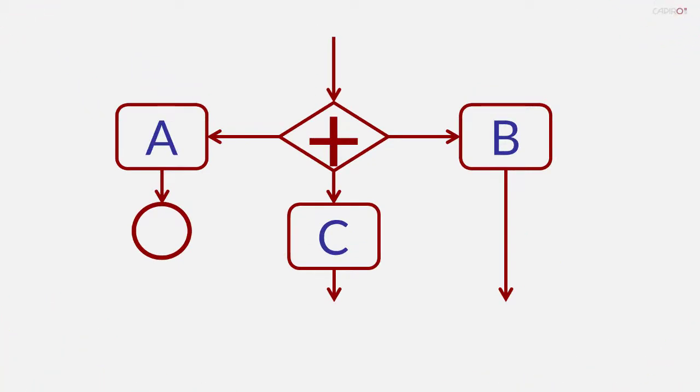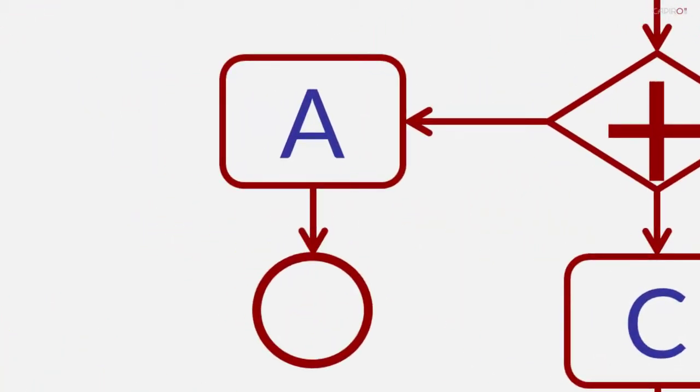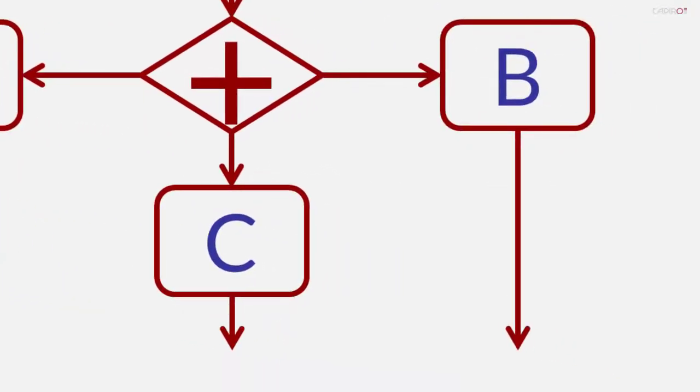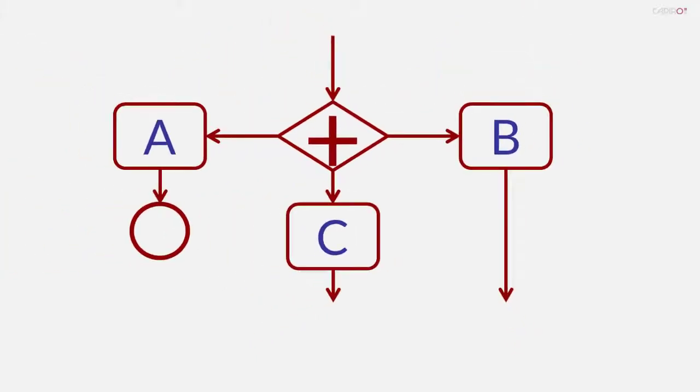In this scenario, the non-end event will terminate the flow exiting from activity A. The other parallel flows, i.e. the sequence flows from B and C, will continue.